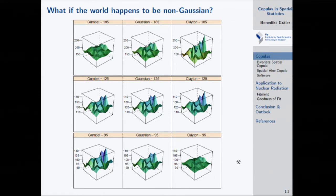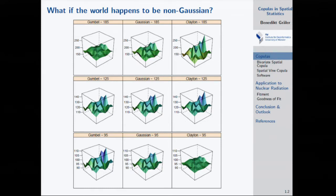That's the effect of different dependence structures. The Gaussian distribution in the middle column is always in between. The key property of the Gaussian dependence structure is that it's symmetric — it has the same variability for a high value of 185 as for a low value of 95. It doesn't distinguish between high and low values; the variability is always the same.